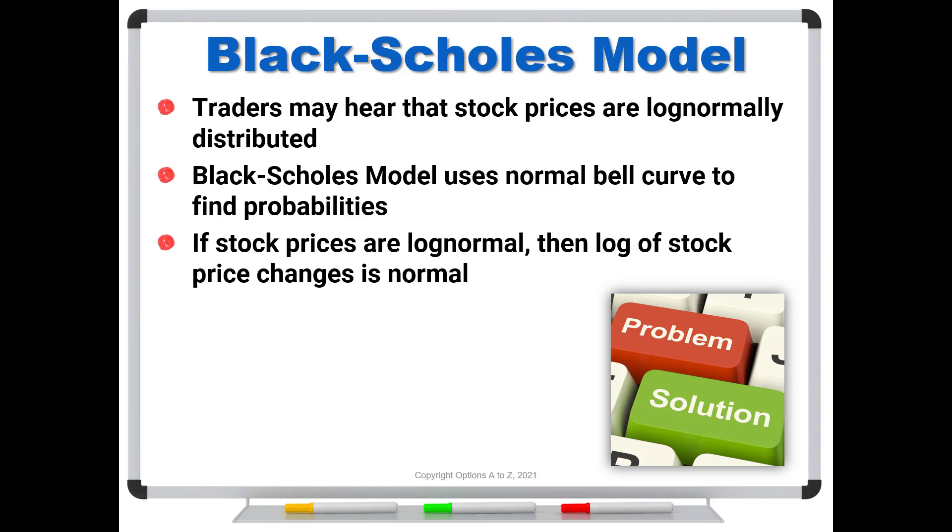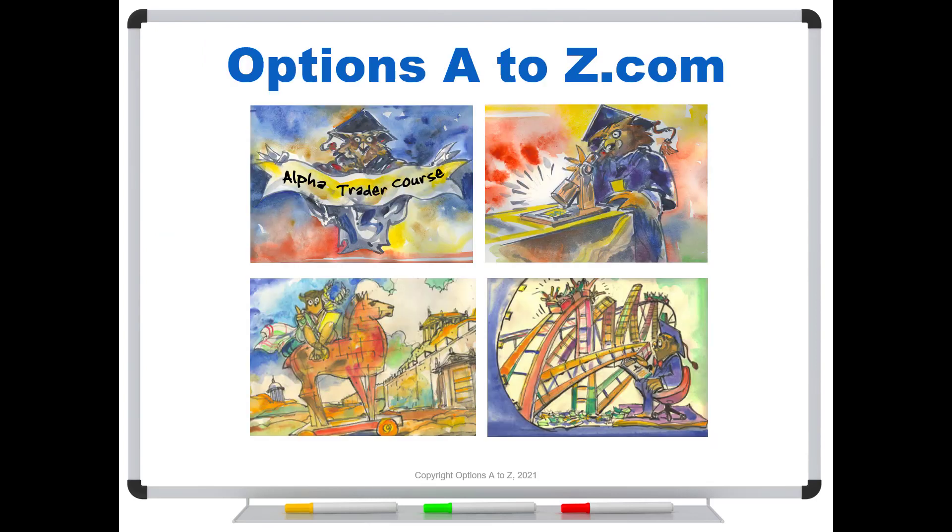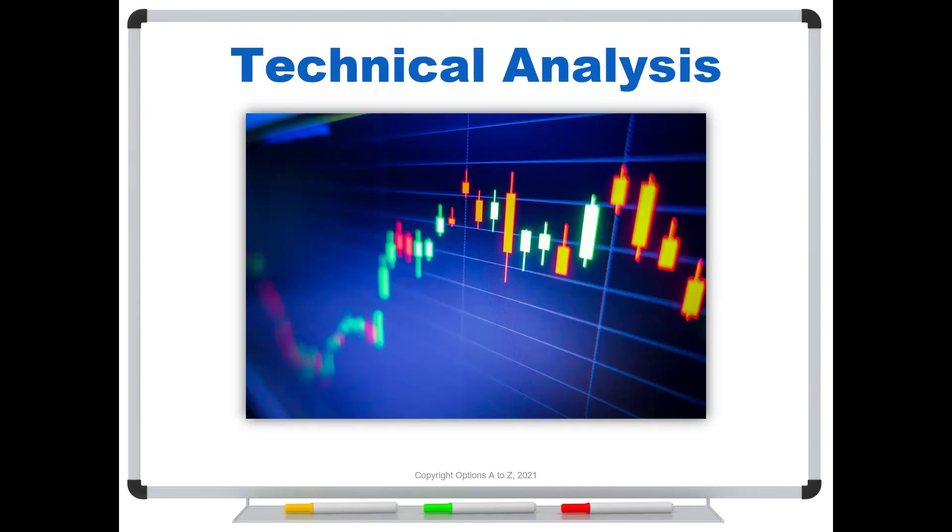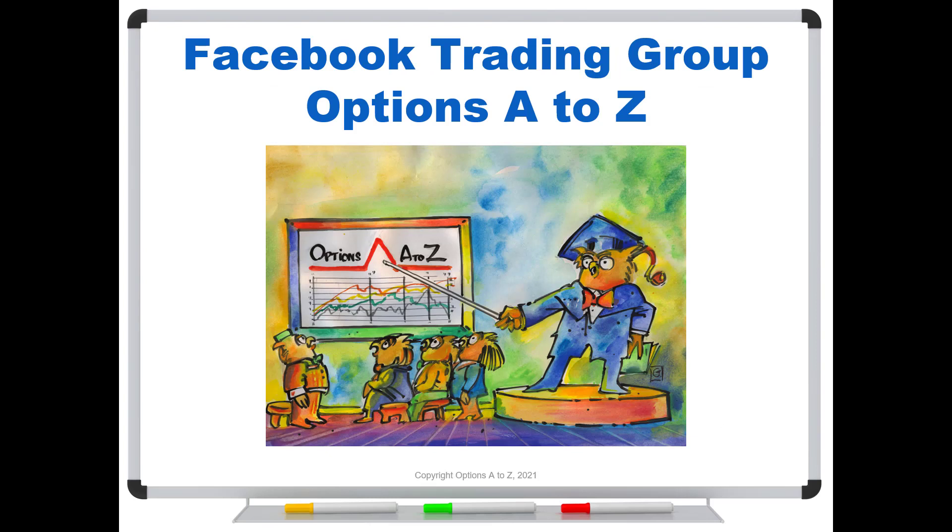But for right now, I just want you to at least understand what a log normal curve is and why it occurs. And then we'll take a look at some of the implications for future videos. And so for anyone who'd like to learn more about the arts and science of options trading, please check out the Alpha Trader course, Strategy Lab, and a technical analysis course. It's all at optionsAtoZ.com. Also, please join us on the Facebook trading group, Options A to Z, and you can find a link in the description below.